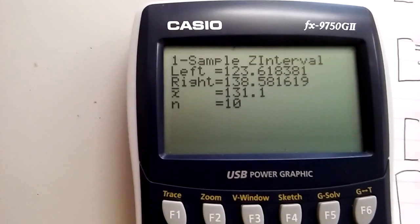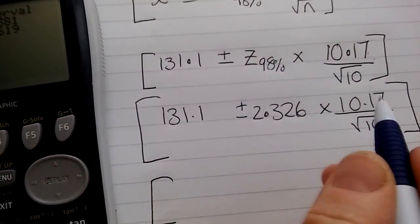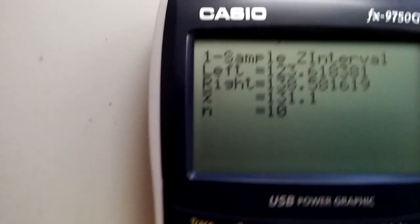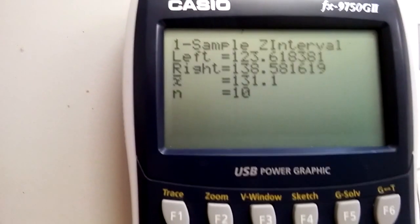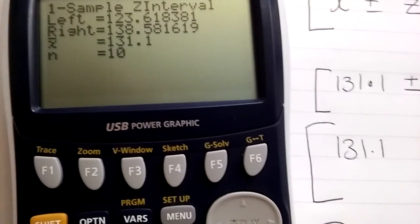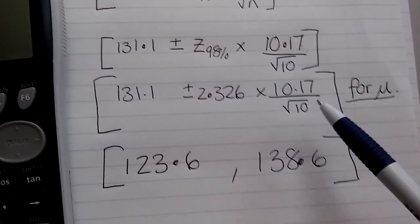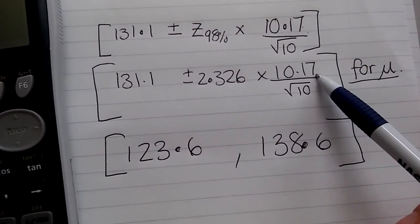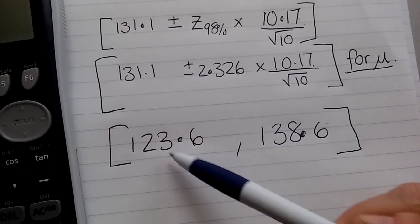And that should check and be the same as the values if we'd done this on the calculator. So we should get 123.6 and 138.6. Those might be slightly different to the one he did in the video because I think he used the population standard deviation there, which will make a slight difference with these two numbers.